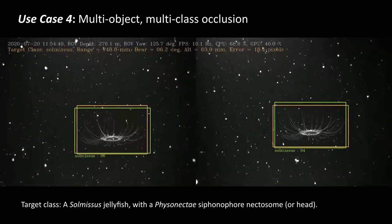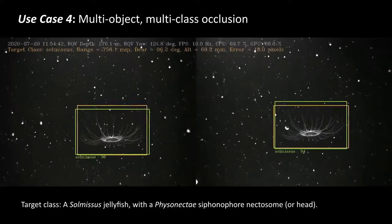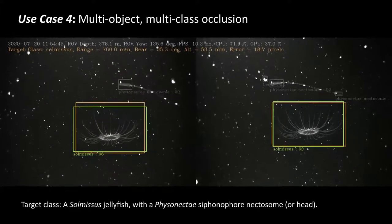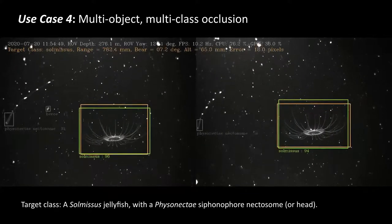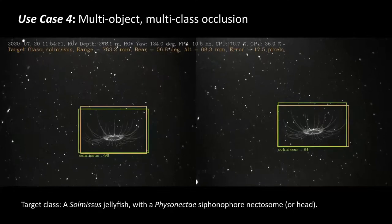For use case four, here we have a multi-object multi-class occlusion, which is shown by this Solmissus jellyfish and its brief encounter with a small siphonophore.